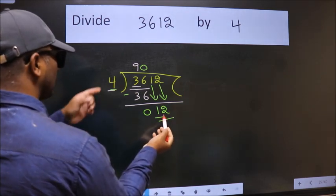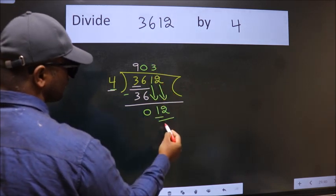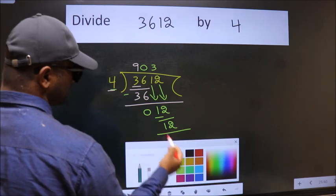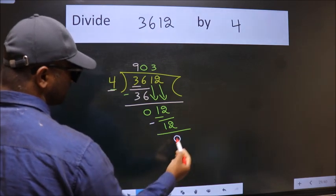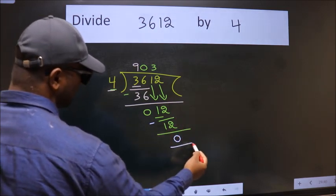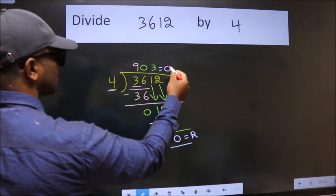When do we get 12? In 4 table is 4 3s 12. Now we subtract. We get 0. No more numbers to bring it down. So we stop here. This is our remainder and this is our quotient.